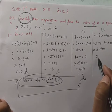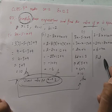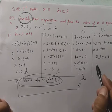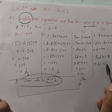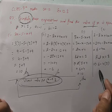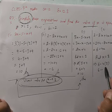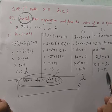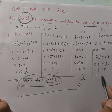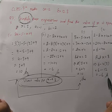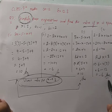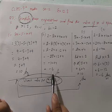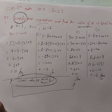अब 6 minus 4x में x = 3 put करते हैं: 6 minus 4×(3) = 6 minus 12 = minus 6. Same answer आया: minus 6.